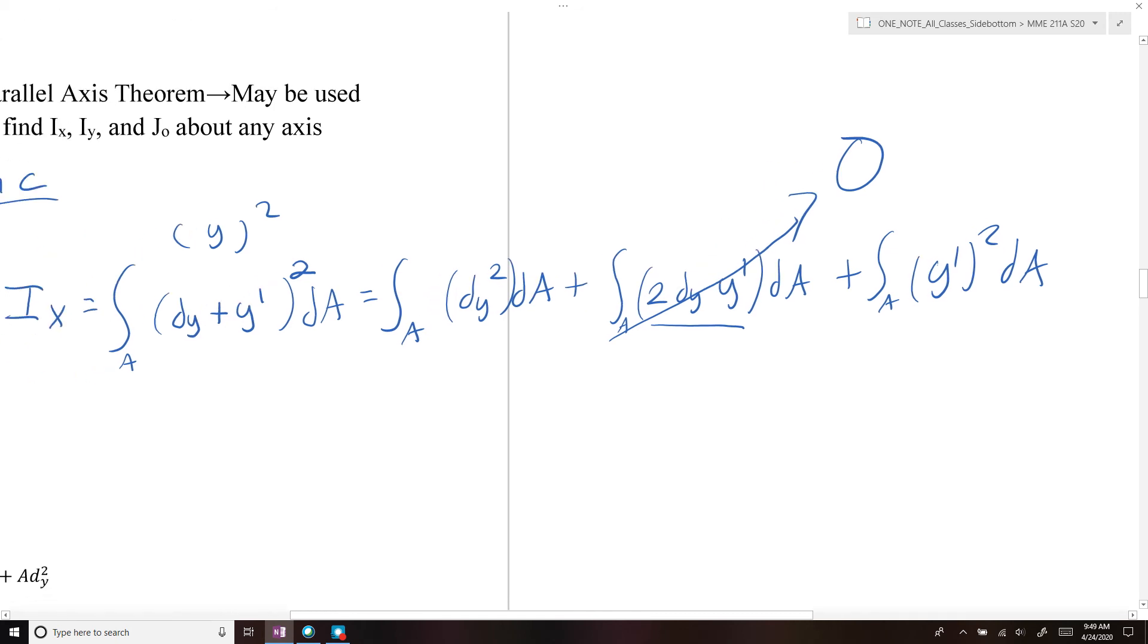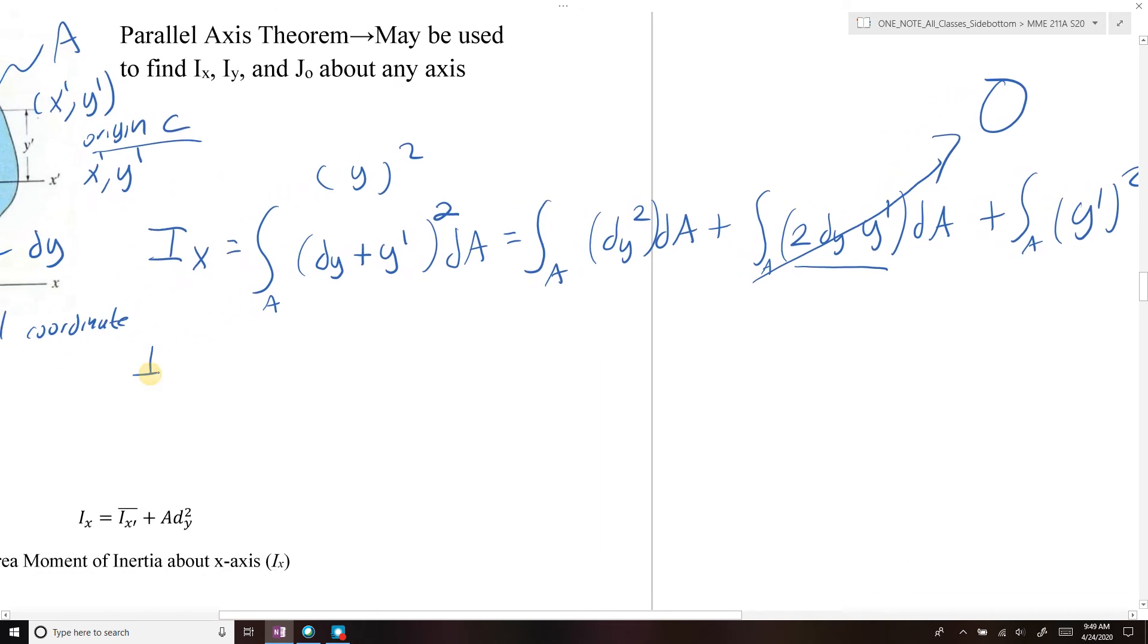And what that leaves us with is we get Ix is equal to dy squared times dA. dy is a constant, so we can bring it out. So the integral of dA would just get simplified down to A, so we end up just getting dy squared A.